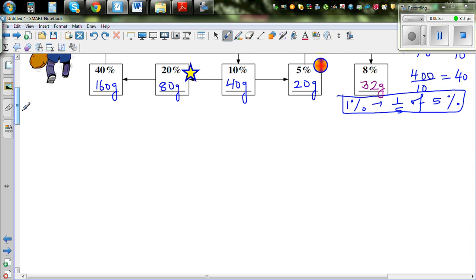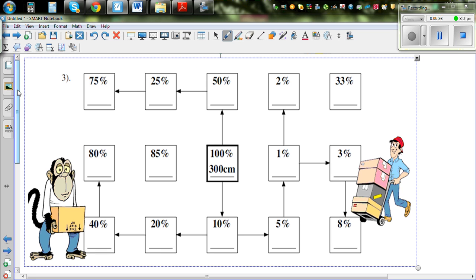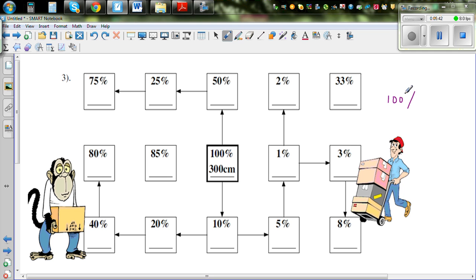This is a challenge. I want you to do the next page. I would like you to do this yourself. What's given is 100% equals 300 centimeters. You have to use this information to find all others. So 50% is half, so divide by 2. 10% is 1 tenth, so divide by 10, and so on.